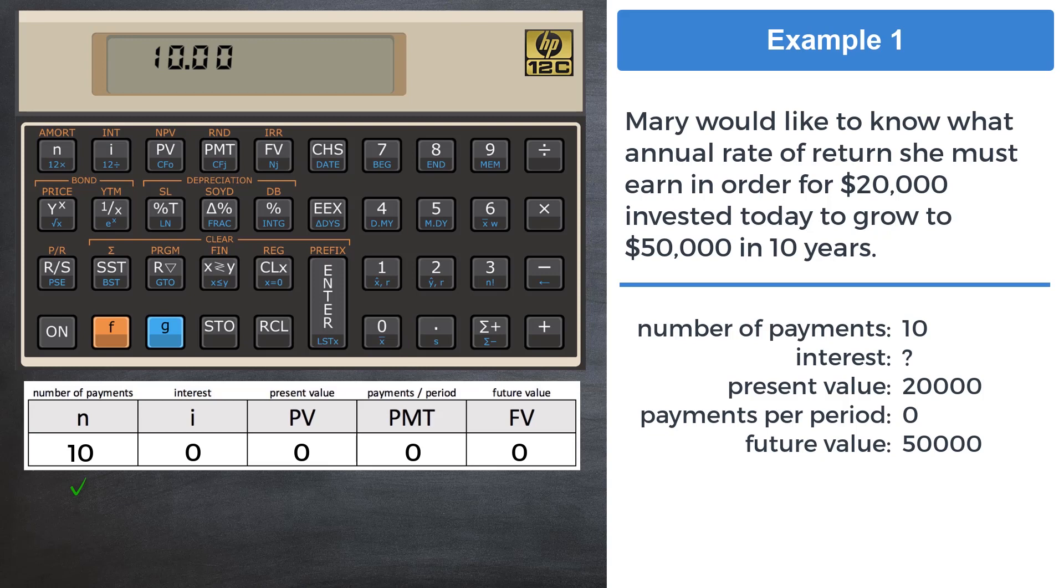That's all you need to do to enter the data. It is not necessary to press the enter key as you would expect. The variable present value is $20,000. Now pay attention to this important detail.